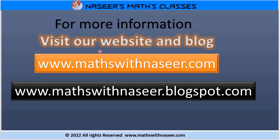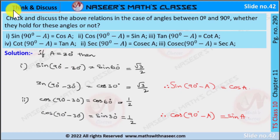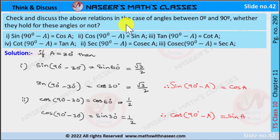For more information, visit our website and blog: www.mathswithnaseer.com and www.mathswithnaseerblogspot.com. Now we are going to solve Think and Discuss, page number 290, Chapter 11 Trigonometry: Check and discuss the above relations in the case of angles between 0 degrees and 90 degrees, whether they hold for these angles or not.